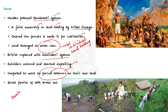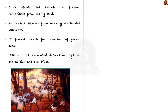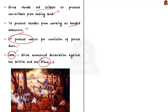At this time, the great famine of 1895 broke out. Birsa Munda led the tribals primarily to prevent non-tribals from taking their land and to prevent the Mundas from working as bonded laborers. He organized his first protest march for the remission of forest dues. In 1894, Birsa announced his declaration against the Bhutis and the Dikkus — the outsiders who exploited the tribal land. This began the Munda Ulgulan.